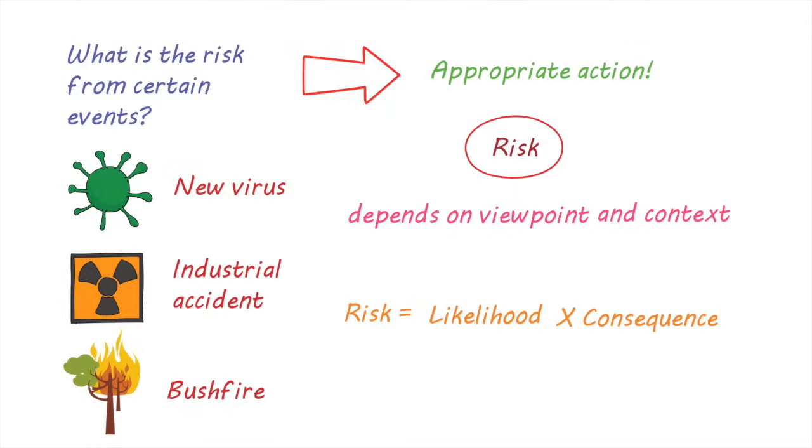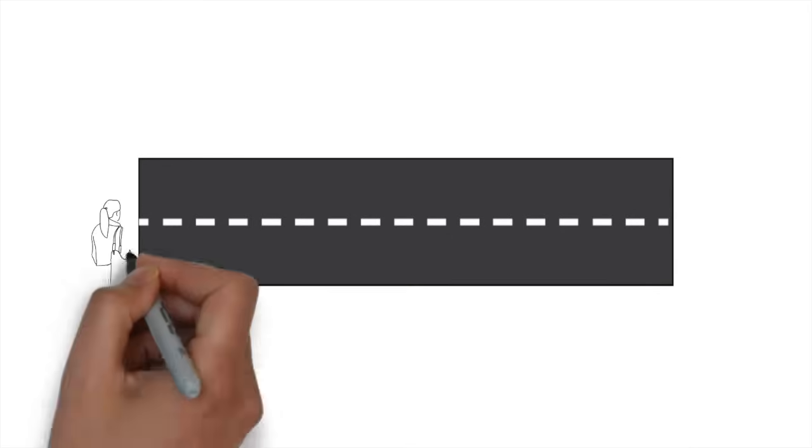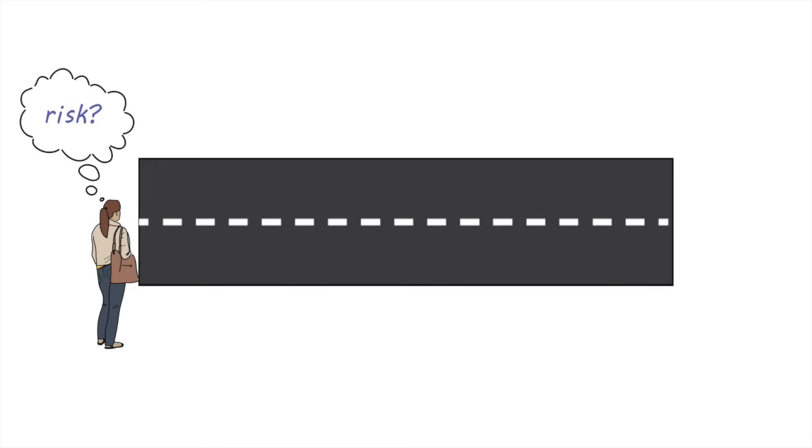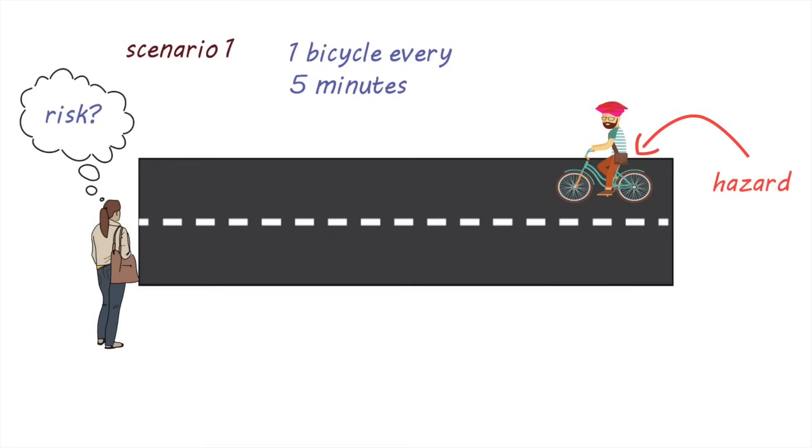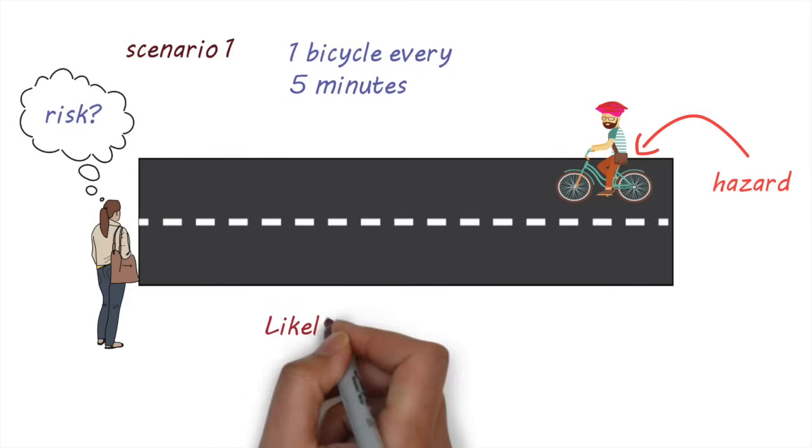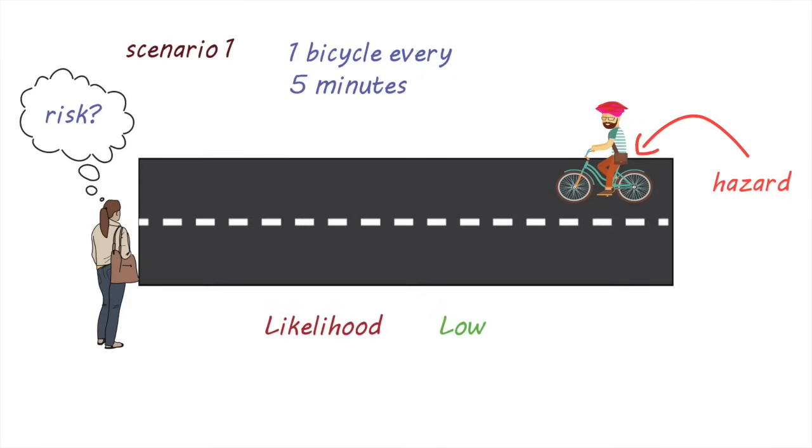Let's have a look at an example. Say you have to cross a road and you're trying to figure out what the risk associated with this is. Let's take a look at some different scenarios. In the first scenario, our hazard is a bicycle. Let's assume there are only bicycles allowed on this road and the road is not that busy—there's only one bicycle every five minutes. Because bicycles don't go on that road very often, the likelihood of the bicycle crashing into you is low. If the bicycle does crash into you, the consequence would be relatively low. So in this scenario, the likelihood and the consequence are both low, therefore the overall risk is low.